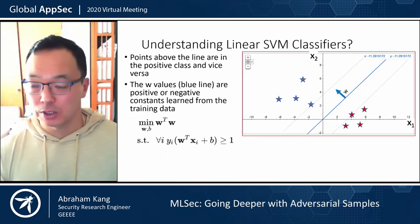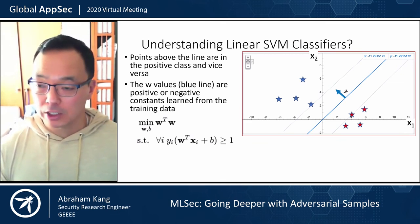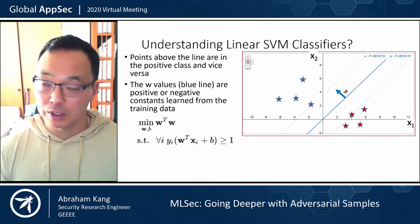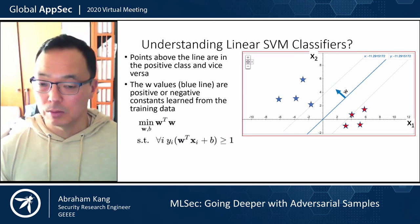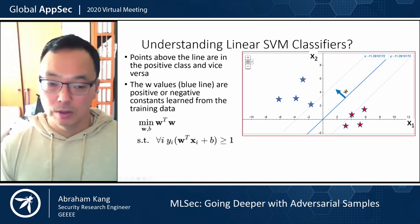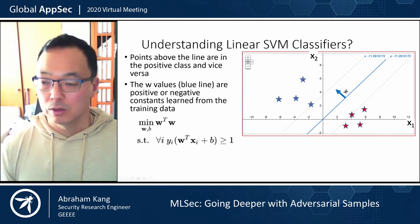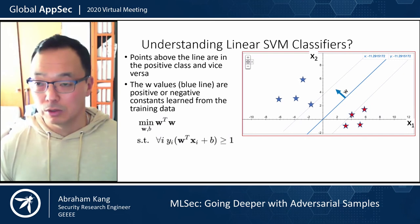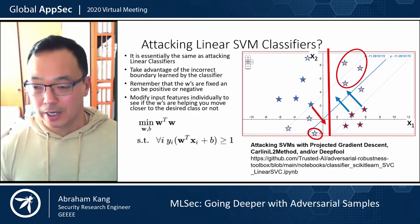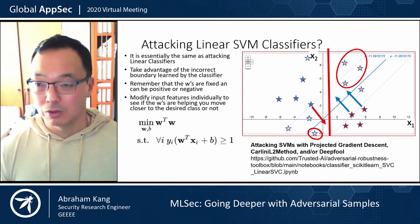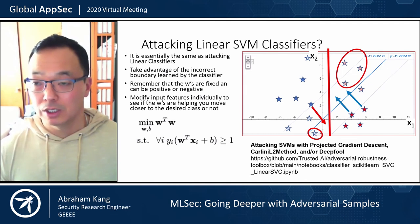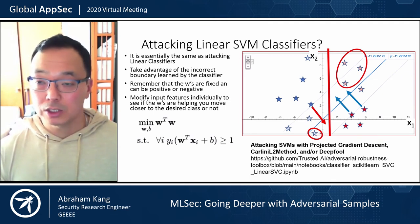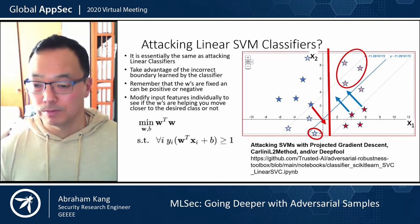For support vector machines, we try to maximize the margin between the closest points to the learned boundary line, using an objective function with constraints. The same issue can occur with linear SVMs — if your training data is bad, the SVM learns an incorrect boundary. As we've been discussing, once there's an incorrect boundary mismatched with the human boundary, it gives you an opportunity to create adversarial samples that do not look different to a human but have drastically changed the model's output prediction. There's an example in the links on this slide.